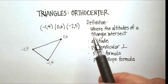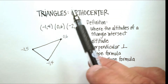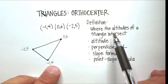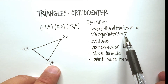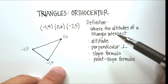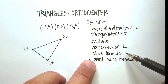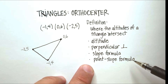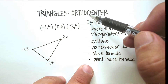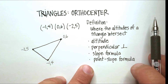In this video we're going to go over how to find the orthocenter of a triangle. An orthocenter is where the altitudes of a triangle intersect. We'll cover what an altitude is, what a perpendicular is, review the slope formula, and review the point-slope formula, because we're going to find this orthocenter using algebra.